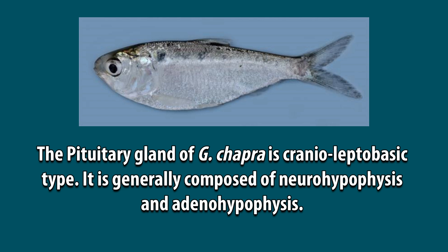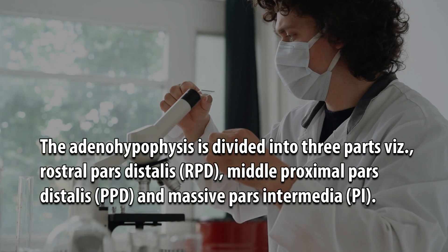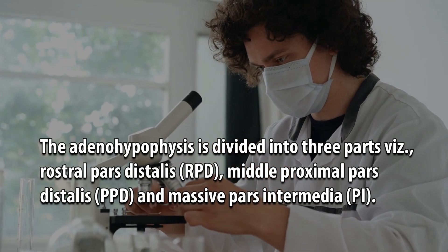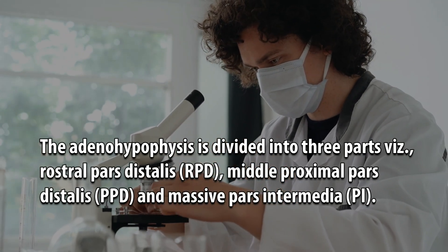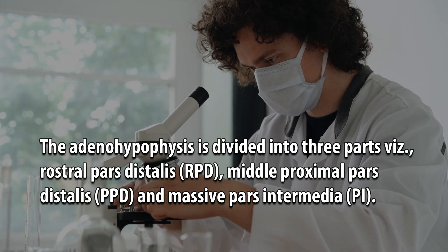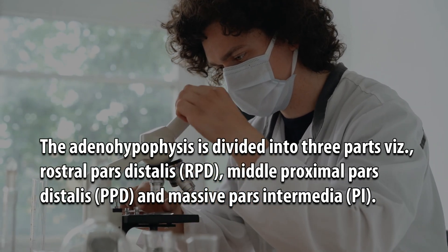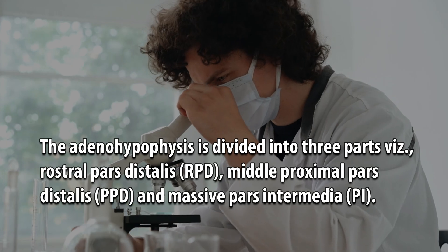The pituitary gland of G. chhapra is cranioleptobasic type, generally composed of neurohypophysis and adenohypophysis. The adenohypophysis is divided into three parts: rostral pars distalis (RPD), middle proximal pars distalis (PPD), and massive pars intermedia (PI).